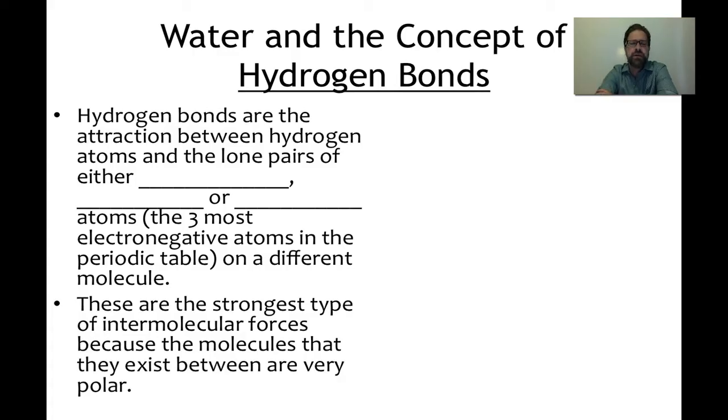I want to hit hydrogen bonding first. Hydrogen bonds are the attraction between hydrogen atoms and the lone pairs of either nitrogen, oxygen, or fluorine. Those three elements are the most electronegative elements on the periodic table. They're close to having their octets full, so they're looking for a few more electrons to get that stable octet of eight electrons in an outer shell.